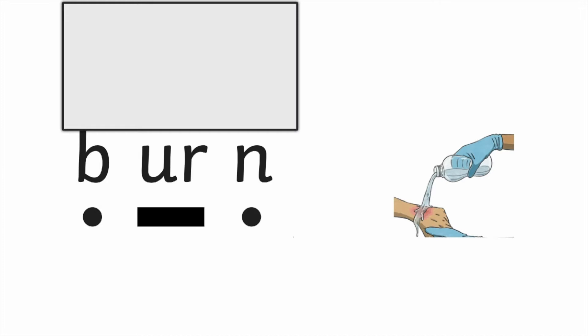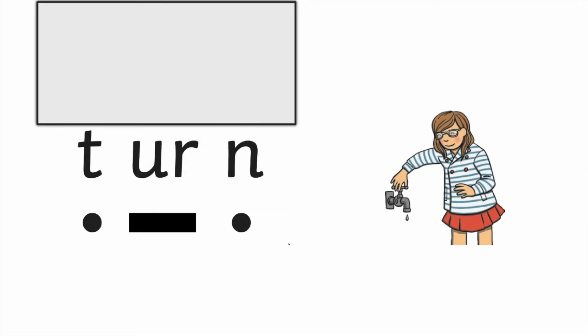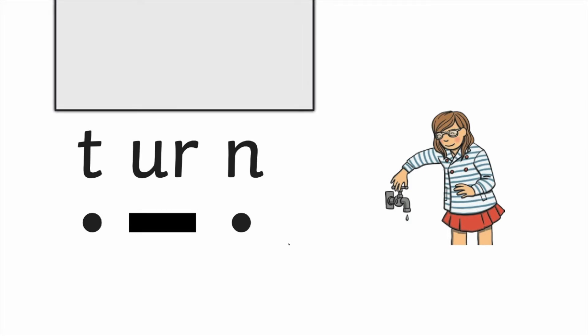I bet you can guess the next word before I show you. What's that girl doing there with the tap? Remember the word has got to have an 'ur'. I think the girl is turning the tap. Here is the word turn. Blend with me: T - ur - N. A bit faster: T-ur-n. Turn. Great work, well done.